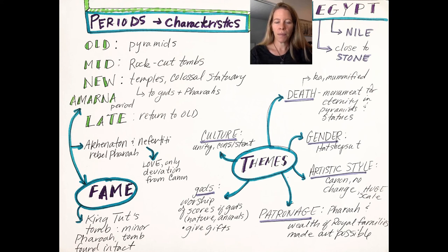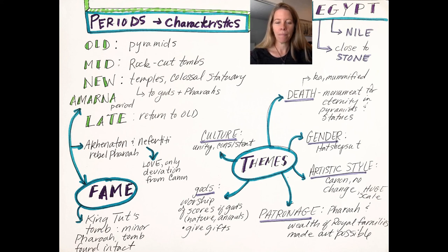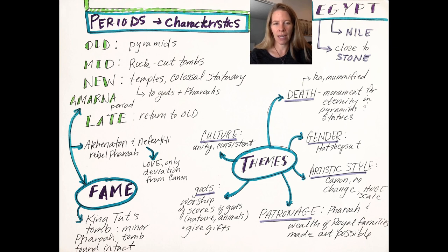This culture — besides the Amarna period, which is only about 20 years of deviation — is unified and consistent. We'll see this deviate when we get to Greece. But we're going to look at how this particular canon serves Egypt well in keeping their statuary and structures alive for eternity.